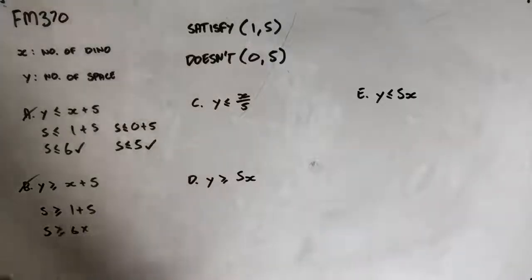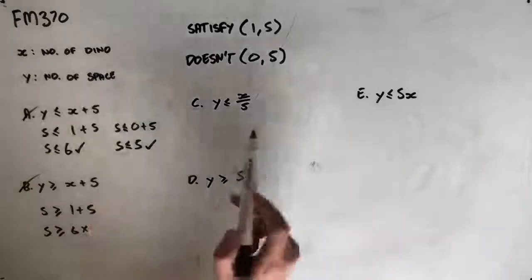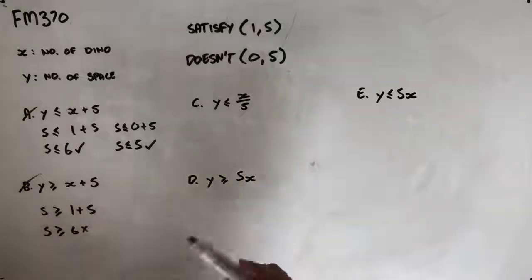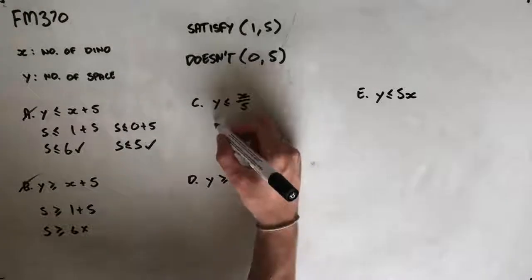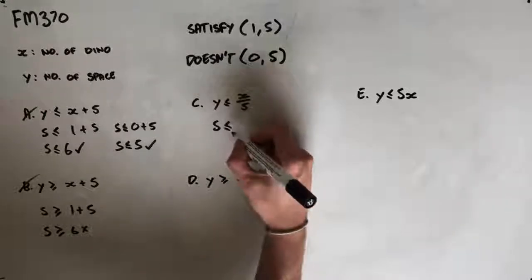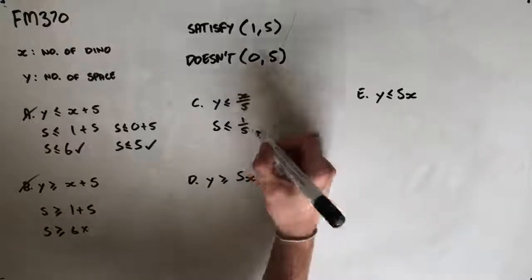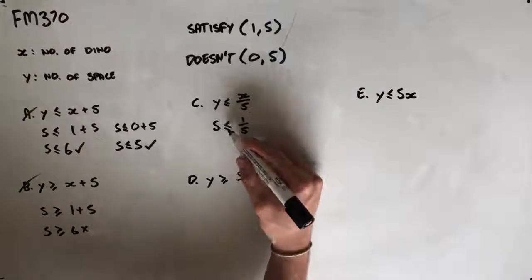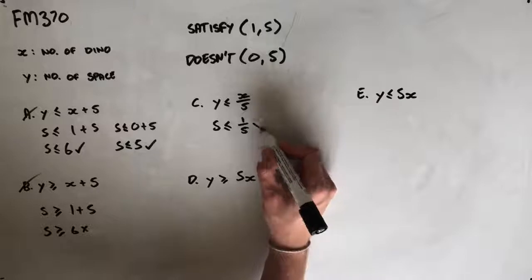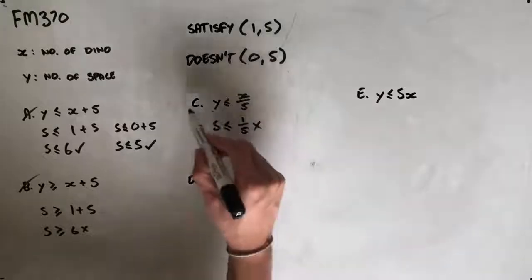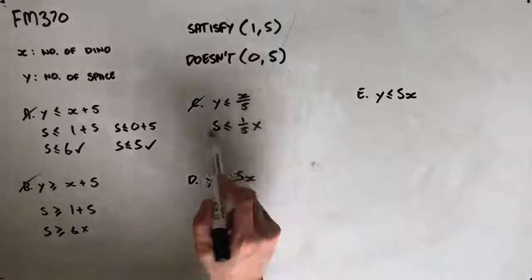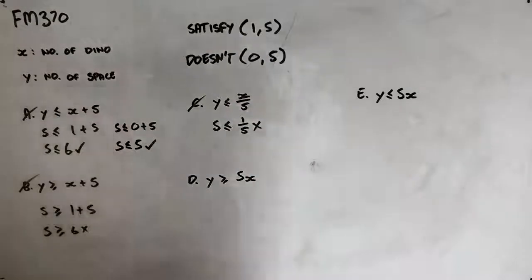Option C is Y is less than or equal to X over five. Inserting the conditions that should satisfy this inequality, we get five is less than or equal to one on five. We know that five is not less than or equal to one fifth, so this isn't true. C is not our correct answer because the values of one and five should satisfy the inequality.